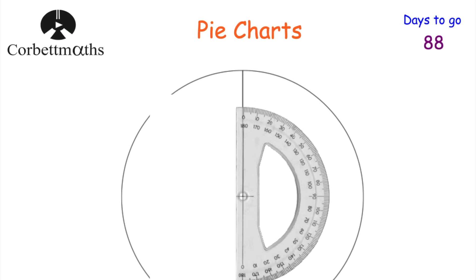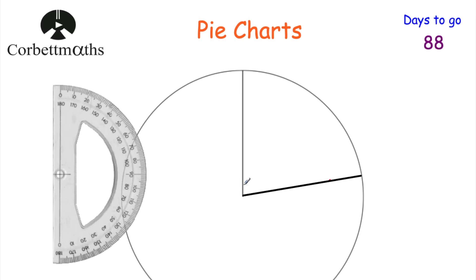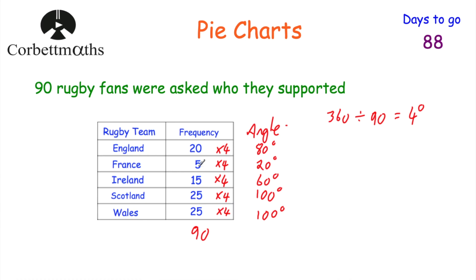We find our 80 degree angle, starting at zero and going around — 10, 20, 30, 40, 50, 60, 70, 80 degrees — and make a dot there. Then we take the protractor away and draw a line from the center through that dot to the edge of the circle. I'll mark that as 80 degrees, and label that sector England.